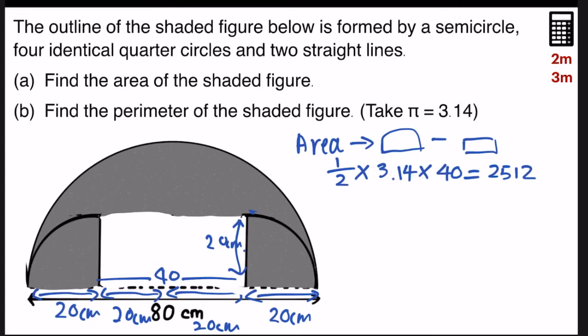Now, this is the area of the semicircle. Next, I will find the area of the rectangle that's in the middle by taking length times breadth, 40 times 20, I get 800.